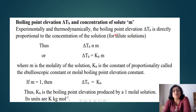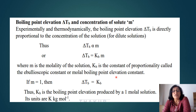Experimentally and thermodynamically, ΔTb is directly proportional to the concentration of the solution for dilute solutions — that is the molality m. So ΔTb = Kb·m, where Kb is a proportionality constant called the ebullioscopic constant or molal boiling point elevation constant. When m = 1, ΔTb = Kb, so Kb is the boiling point elevation produced by a one molal solution. The unit of Kb is Kelvin·kg/mol.